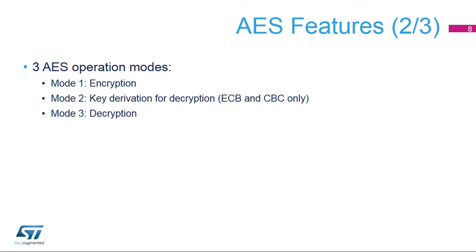The AES features three modes of operation. Mode 1: plaintext encryption. Mode 2: electronic codebook, also referred to as ECB, or cipher block chaining, also referred to as CBC, decryption key derivation — it must be used prior to selecting Mode 3 with ECB or CBC chaining modes. Key derivation derives a new key based on the values stored in the AES key registers before enabling the AES accelerator. Mode 3: ciphertext decryption.